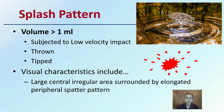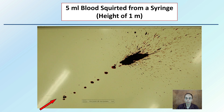This is what it would look like in a cartoon-like image for a low velocity impact. Here is blood simulated and squirted from a syringe at a height of one meter, which gives that low velocity, cast-off-like look and how things may be interpreted in that sense.